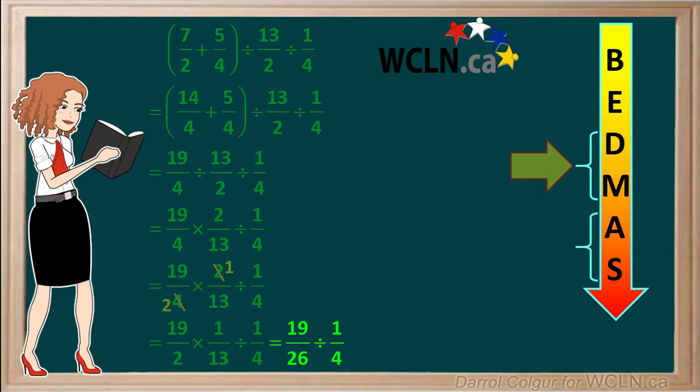19 over 26 divided by 1 quarter is a division. Dividing by a fraction is the same as multiplying by its reciprocal. So this is the same as 19 over 26 times 4 over 1. The diagonals 4 and 26 can both be divided by 2 to give us 2 and 13.